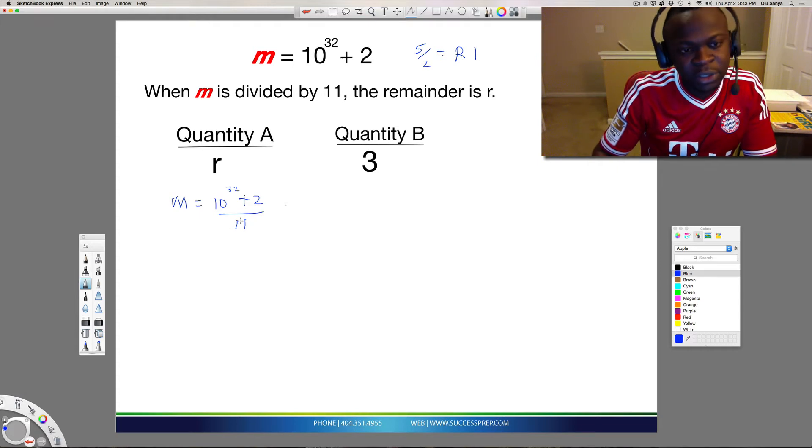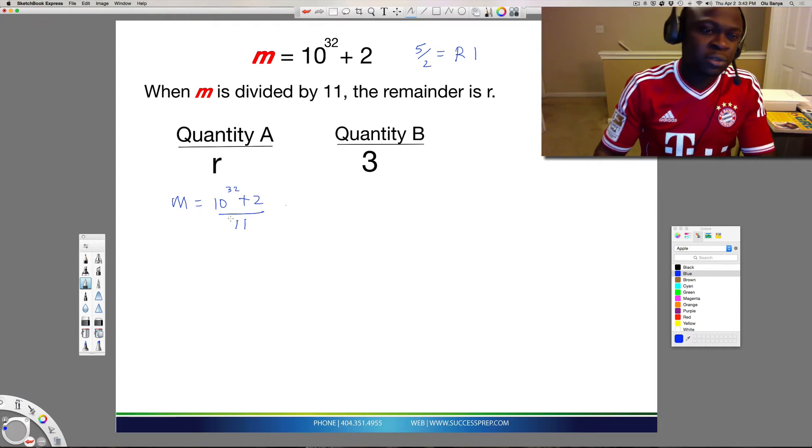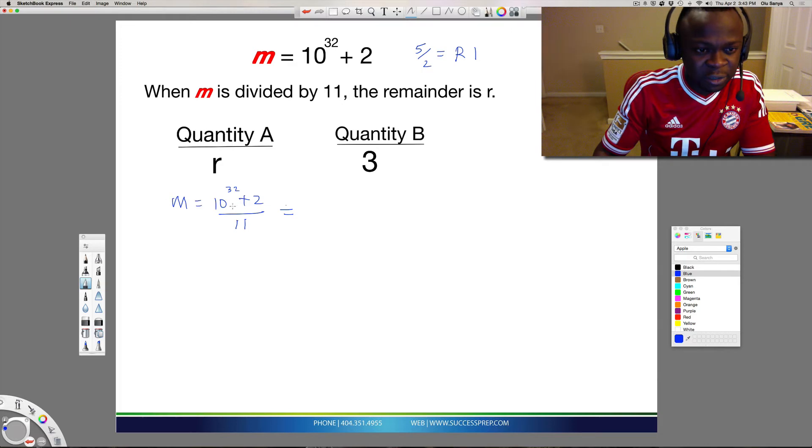So when I come into this question, it says 10 to the 32 plus 2 divided by 11. What you want to do mathematically with this is we need to simplify this a bit. This 11 needs to split under the 10 to the 32 and under the 2. So it's going to look like this: 10 to the 32 over 11 plus 2 over 11.